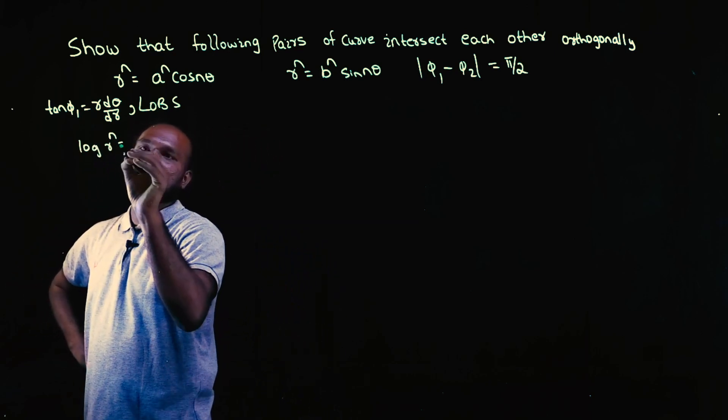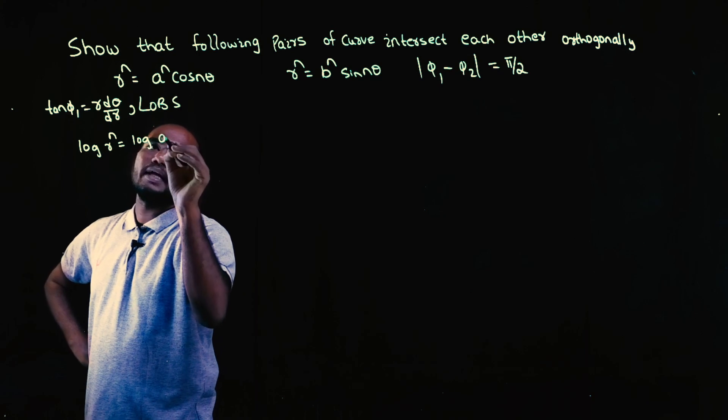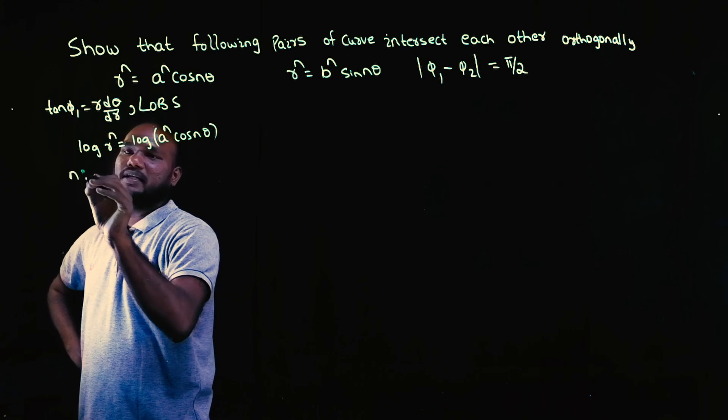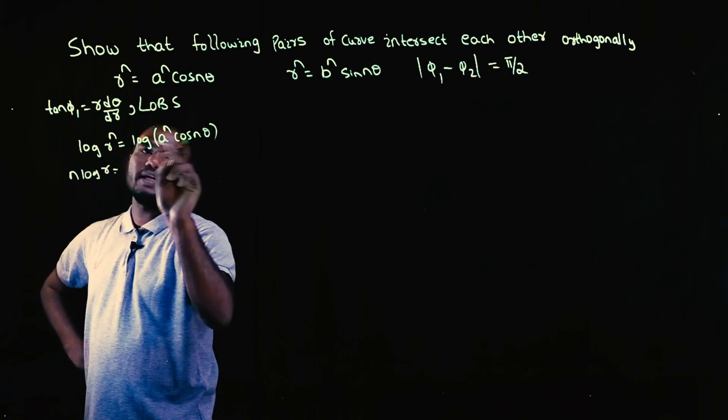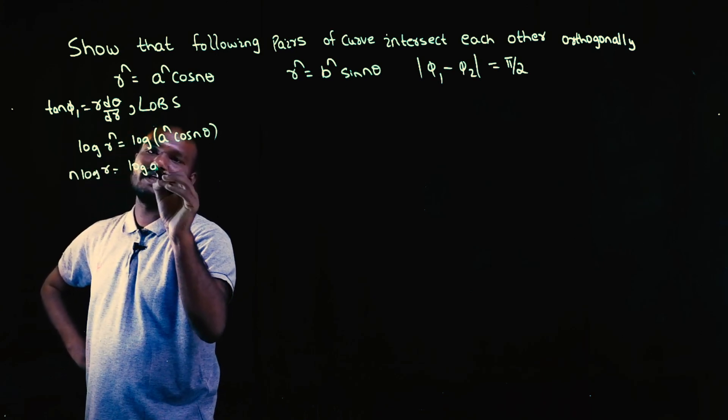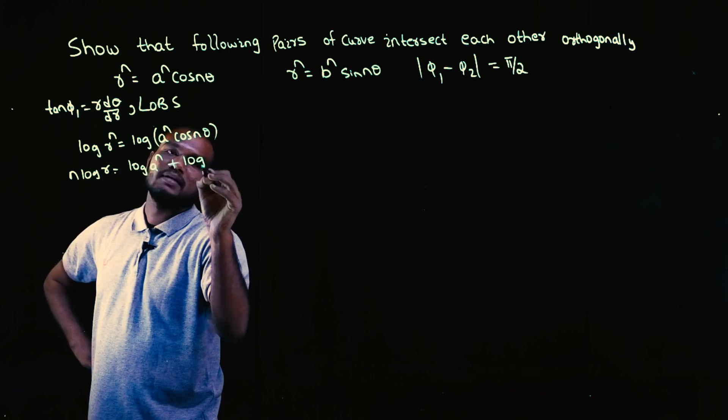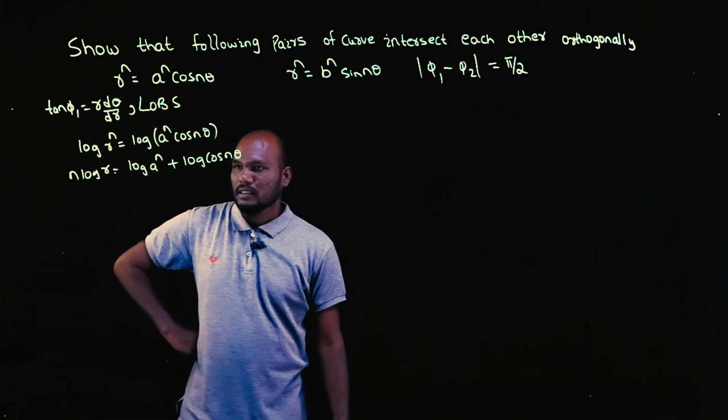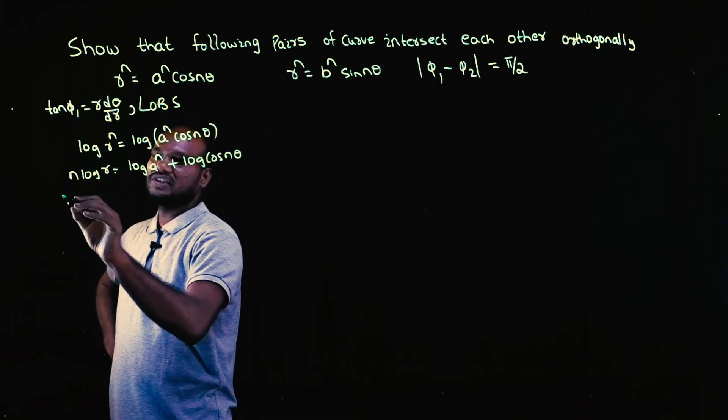Log r power n is equal to log a power n cos n theta. So n will come from n log r. Log a into b is log a plus log b. Now the log property is done, now we have to take differentiation.